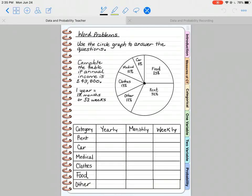It says to use the circle graph to answer the questions. Complete the table that's at the bottom if annual income is $43,800. Remember that one year is 12 months or 52 weeks. And here is the budget that we have to work with.